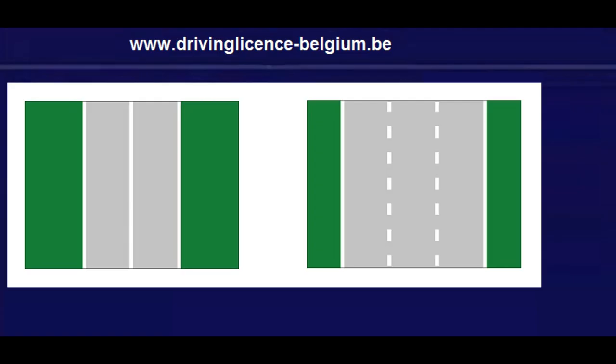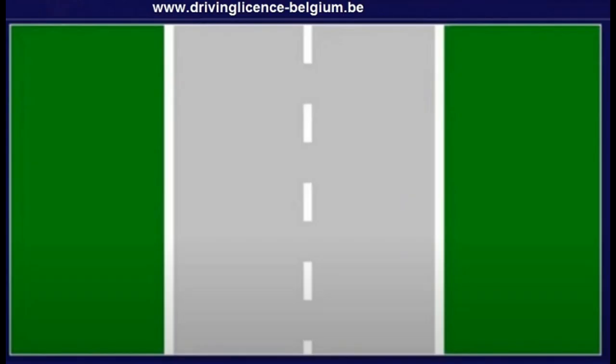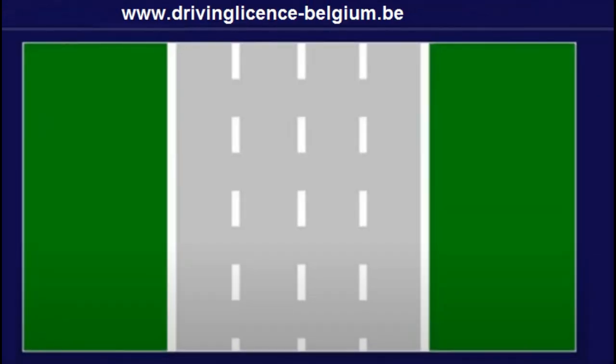The Lanes. A carriageway is divided into lanes by road markings. A road marking can be a continuous white line or a broken white line in the middle of the road. Such markings can divide the road into two, three or more lanes.